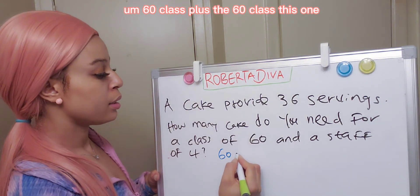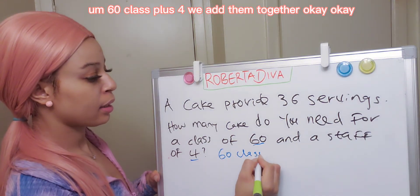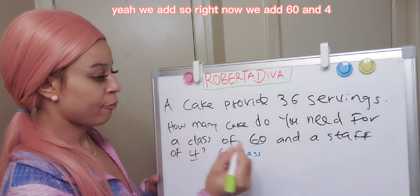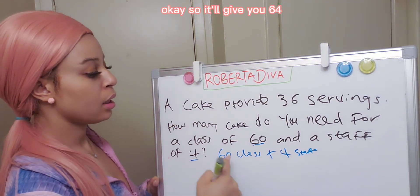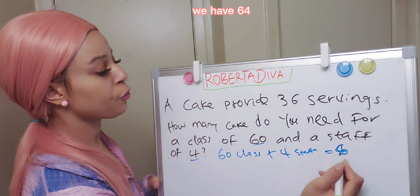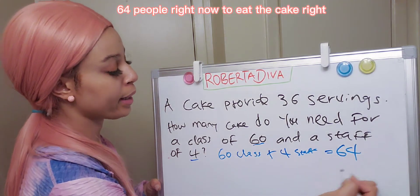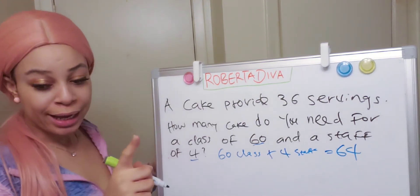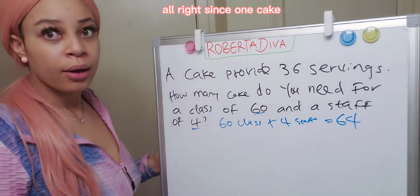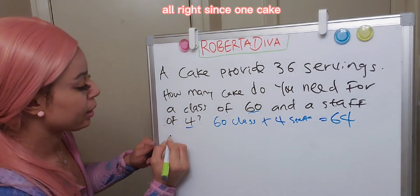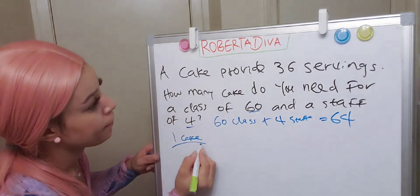We add the 60 students plus 4 staff together. So 60 plus 4 gives you 64. We have 64 people right now who need to eat the cake. Since one cake gives 36 servings...